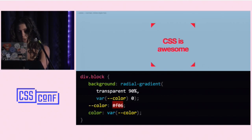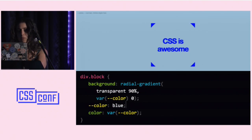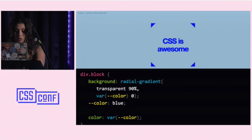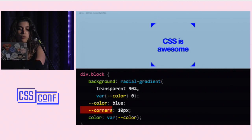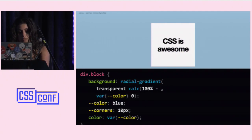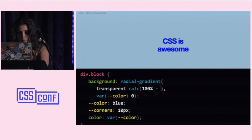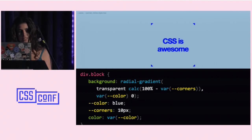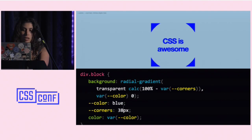As you can see now, if I change the value of the dash-dash color property, it changes everywhere. You might not be very impressed, because you can do the same thing with CurrentColor. But with CSS variables we can do way more than just colors. So let's say I want to parameterize the size of these corners with another variable called corners — instead of 90%, I say 100% minus the value of this variable, which I call with the var() function.